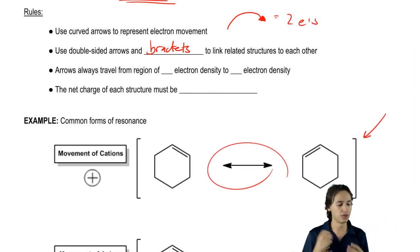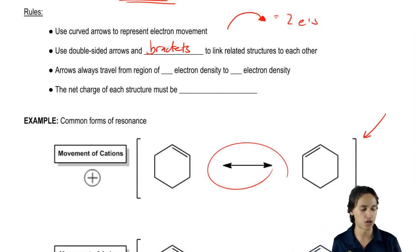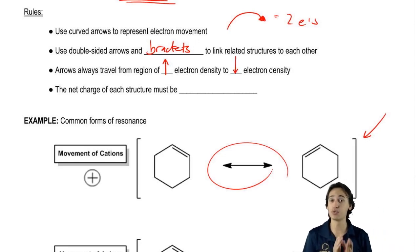Arrows are always going to travel from regions of high electron density to low electron density. This is a rule that applies for the rest of organic chem. Any time we're moving electrons, we always start from the area of the highest density and move to the area of lowest density.